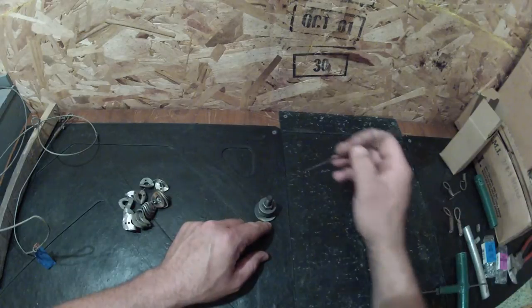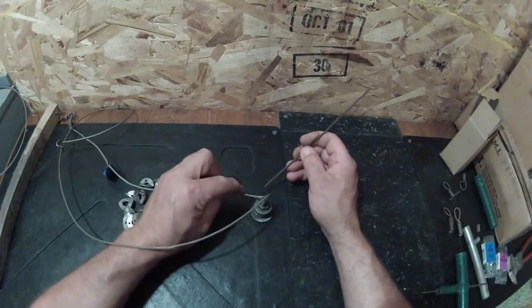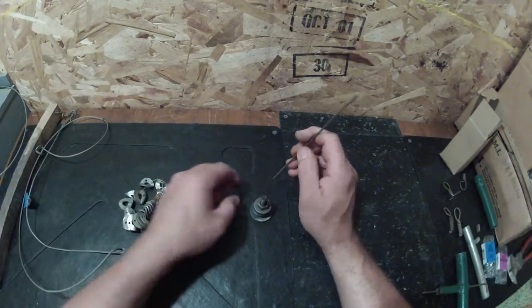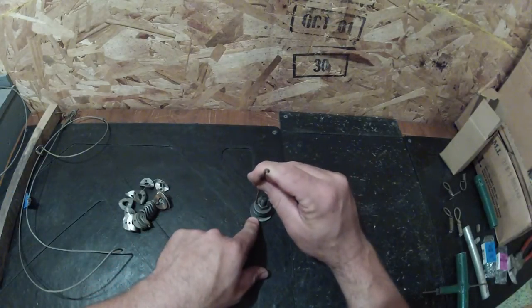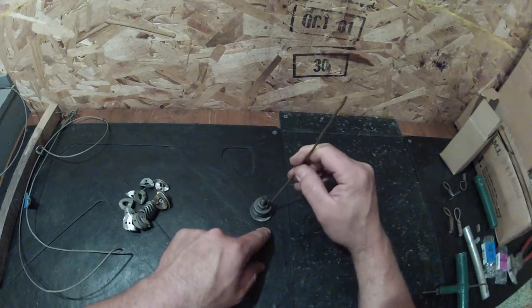And then I'll take a 7/64 drill bit because this is 3/32nds cable and I'll drill down one side clear through. I'll drill down the other side clear through.